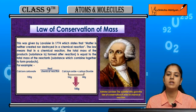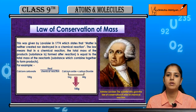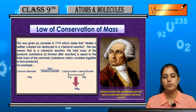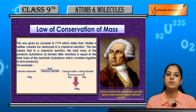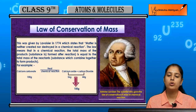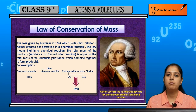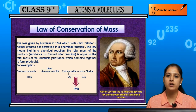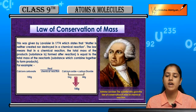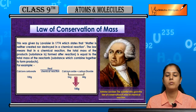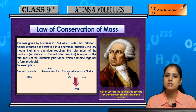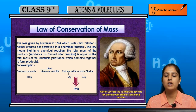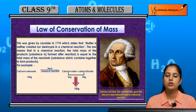Aisa nahi hai ki agar ham koi bhi chemical reaction carry out kar rahe hai, uske beech mein jo starting mein reactants liye hai, uske beech mein koi apne aap se addition ho gai ya reduction ho gai. Jitnay humne reactants ka mass liya, unko react karne ke baad jo product form hoga, uska mass aur reactants ka mass will always be equal. Law of conservation of mass ka matlab hota hai ki jo mass hai reactants ka aur products ka, woh conserved rehata hai throughout the chemical reaction.